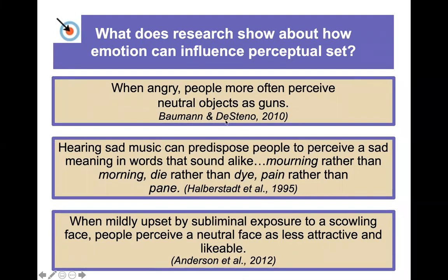What about emotion? How does emotion influence our perception and perceptual set? When angry, people more often perceive neutral objects as guns. Our emotional state can have an effect on what we're actually perceiving. Hearing sad music can predispose people to perceive a sad meaning in words that sound alike — mourning rather than morning, die rather than dye, pain rather than pane. When mildly upset by subliminal exposure to a scowling face, people have been shown to perceive a neutral face as less attractive and less likable. Our emotions are interfering with our perception.